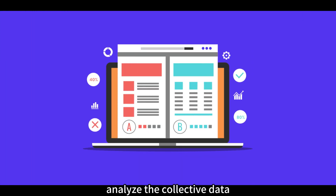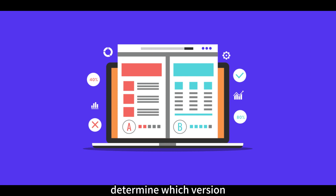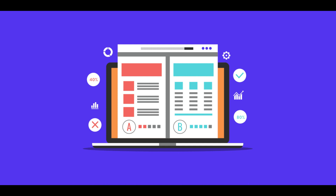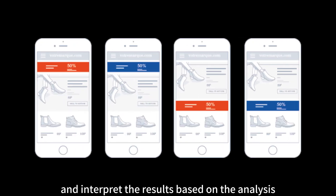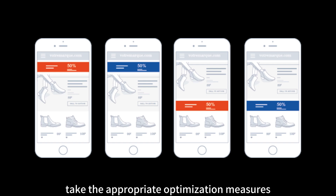Analyze Results. Analyze the collected data, comparing differences between the different versions. Determine which version achieved the intended objectives and validate whether your hypotheses hold true. Draw Conclusions and interpret the results based on the analysis. If your hypotheses are confirmed, take the appropriate optimization measures.